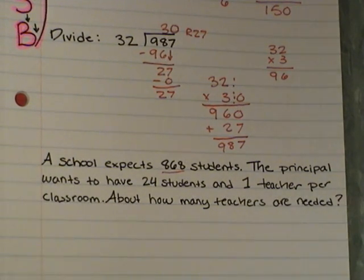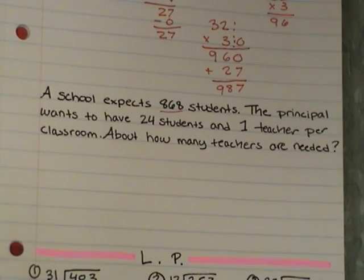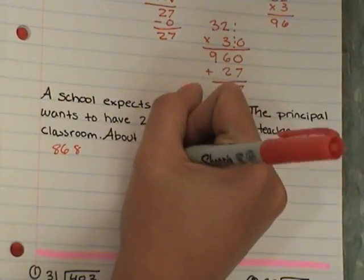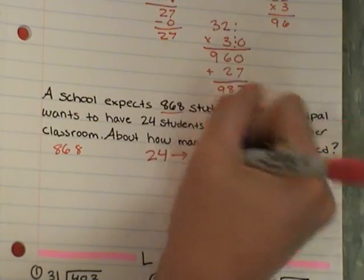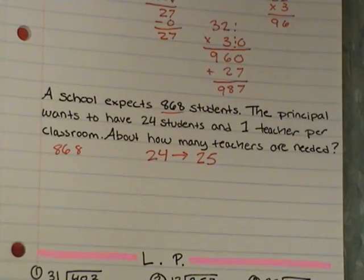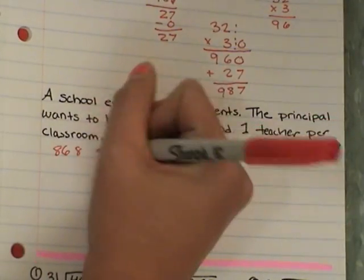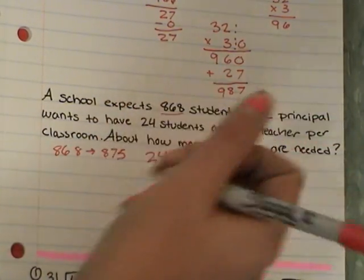So we're going to have to take 868 students and divide them into 24 groups. But when we have numbers like these, sometimes what we need to do is turn them into compatible numbers. So we need to find two numbers that 868 and 24 can kind of work with. So 868, I'm going to write that down, 868 and 24. So 24 is almost 25, and 25 is a good number to work with. Also, I mean, we could round 24 down to 20, which is a good number as well, but 24 is closer to 25. When we look at 868, a compatible number that works with 25, we would say 875.